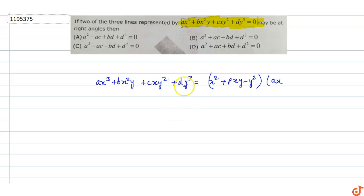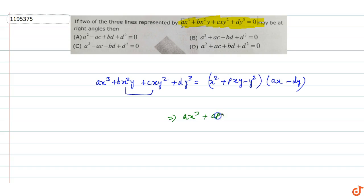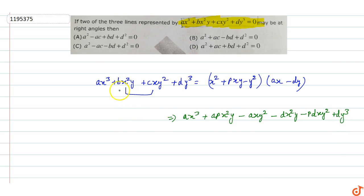We can write the equation as a function. It will be dy³ minus dway, plus dway³. Now we come to the coefficients. Multiplying through, we get ax³ plus apx²y minus axy² minus dx²y minus pdxy² plus dy³.